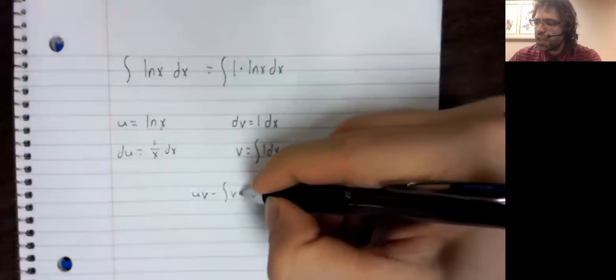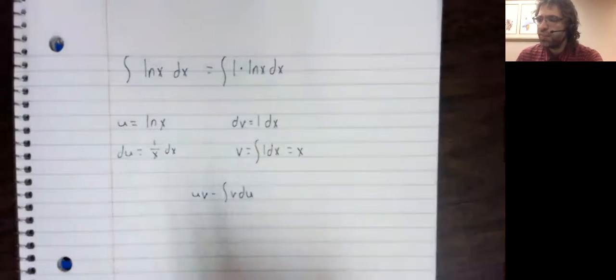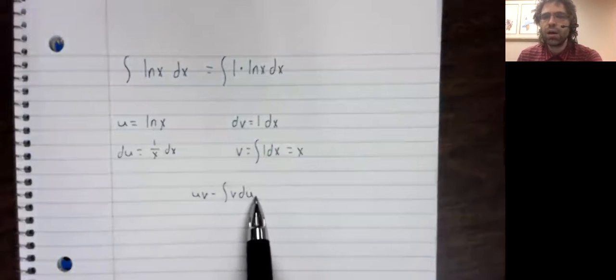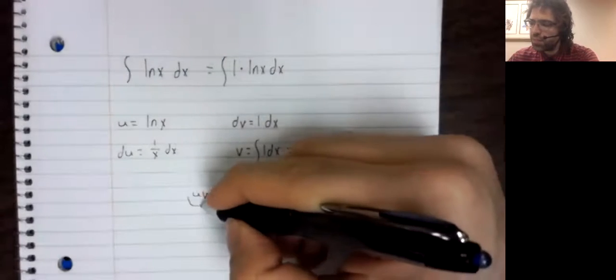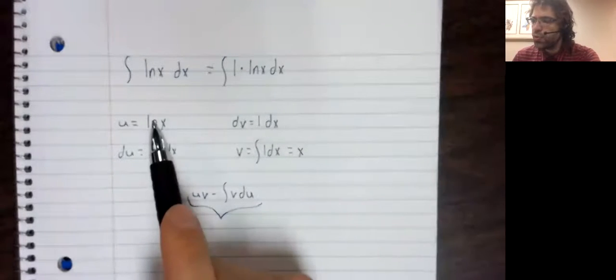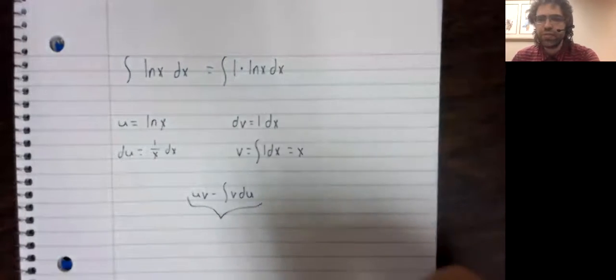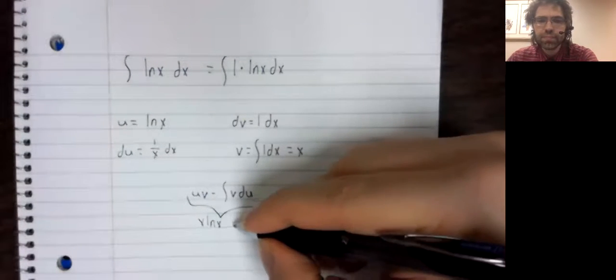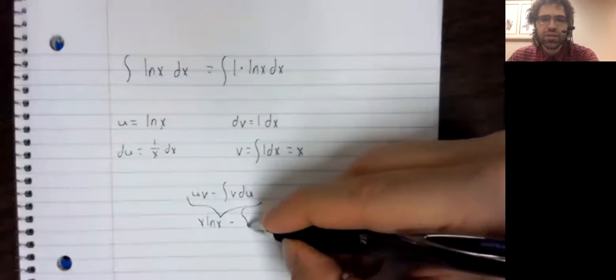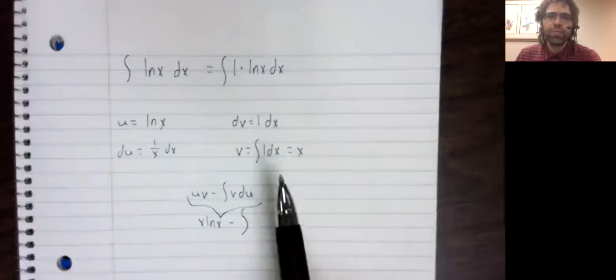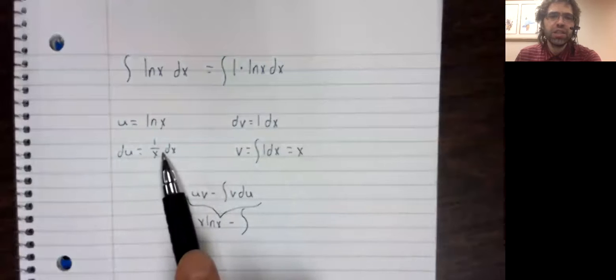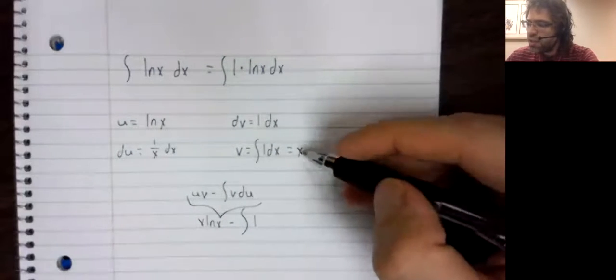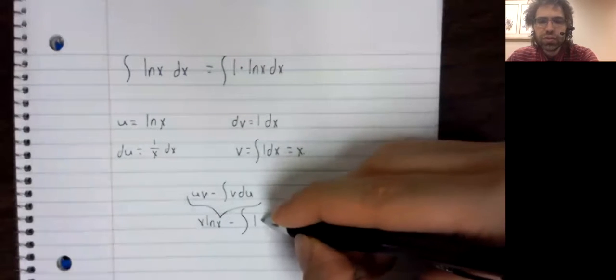And now we plug and play, sticking each of these into our parts formula. u times v minus the integral of v du. You'll notice v du is one, so we get an extremely elementary integral out of this.